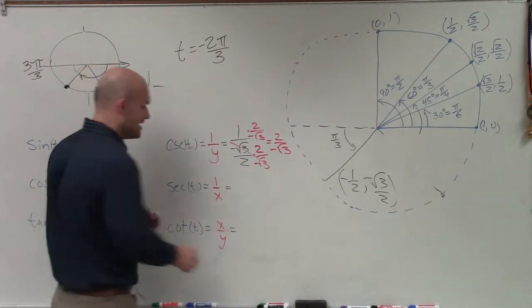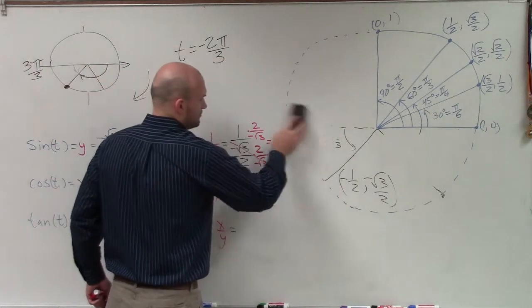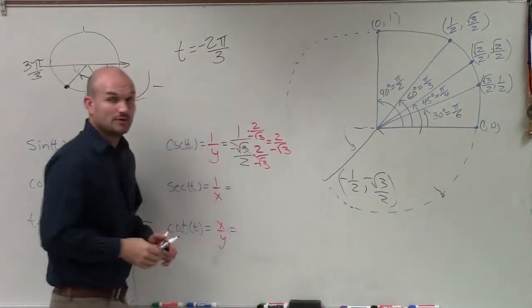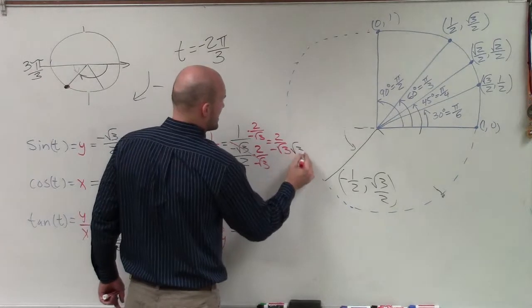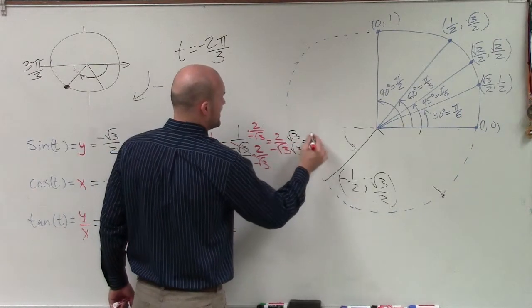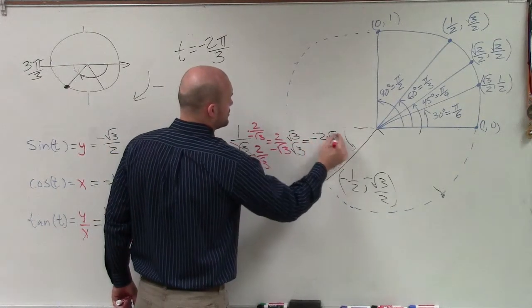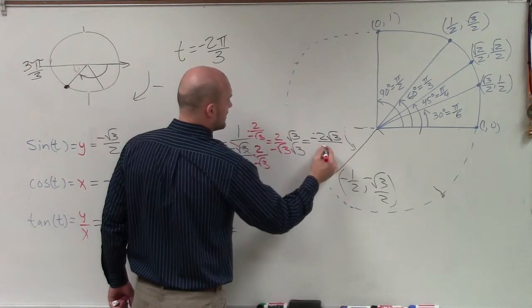But again, I cannot have my square root in the bottom. So I'm going to rationalize the denominator. Therefore, my final answer is a negative 2 square root of 3 over a 3.